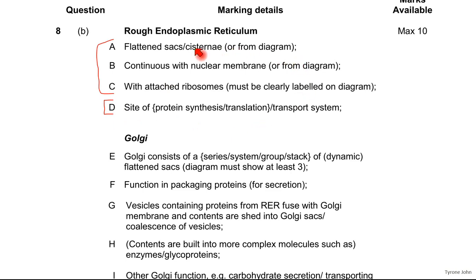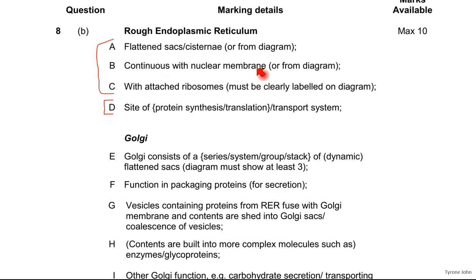You can see in this mark scheme that in brackets they would have allowed diagrams for the cisternae or flattened sacs. So if you did draw diagrams, you would have accessed the marking points here. That's pretty straightforward for the rough endoplasmic reticulum.